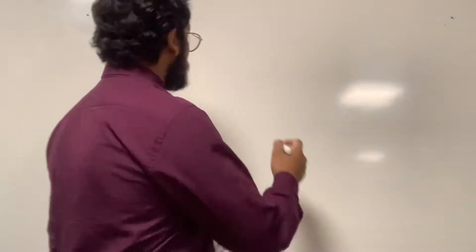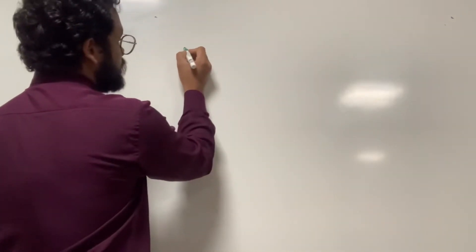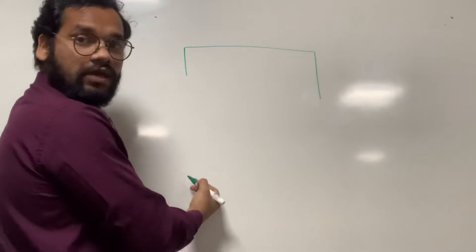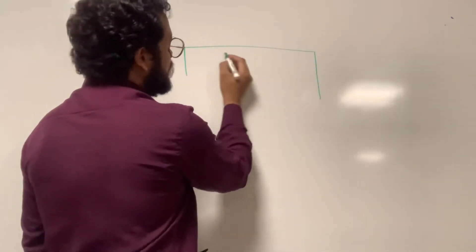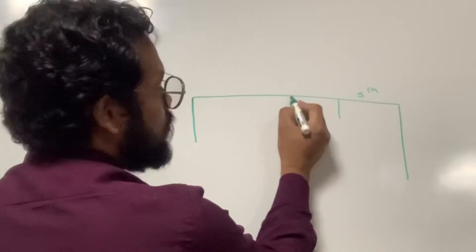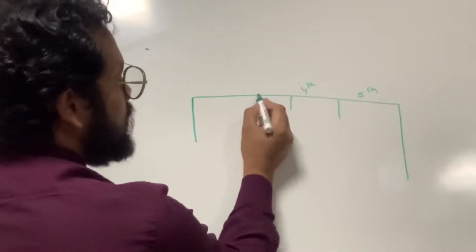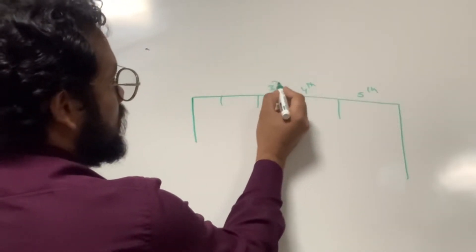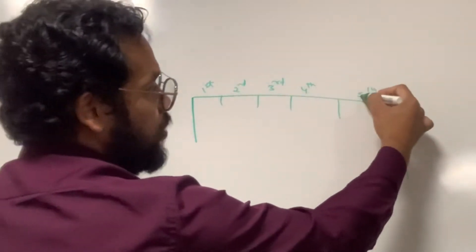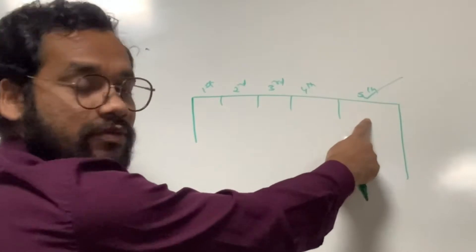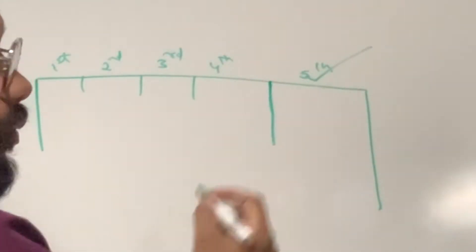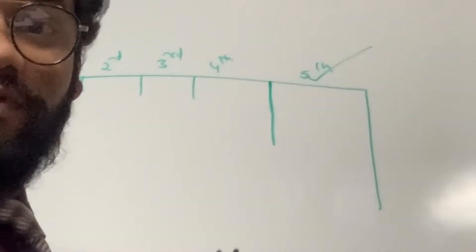Suppose this is the PFD, and this is the 5th column. This is 4th, 3rd, 2nd and 1st. So I will be explaining only about the 5th column. In the 5th column, what all FMAs can appear?